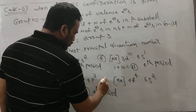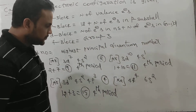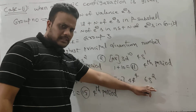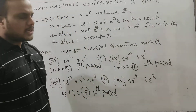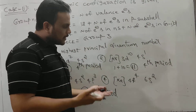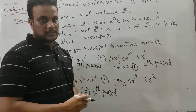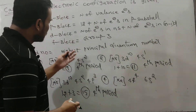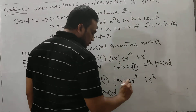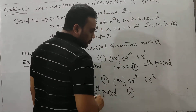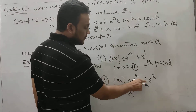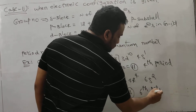Let us talk about example number 4. We are given this configuration: after 6S2, an electron is present in 4F, which is partially filled — specifically 4F4. So anybody can understand that it is an F-block element. All F-block elements belong to group number 3 as I told you, so no need to find group number separately — group number is 3. For period number, we have 4 and 6; the highest principal quantum number value is 6, so it belongs to the sixth period.